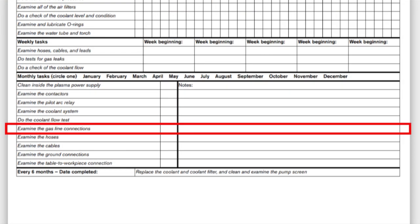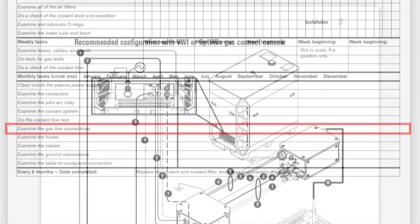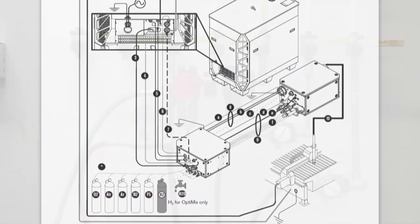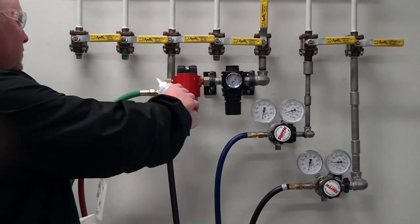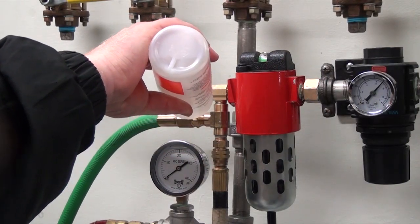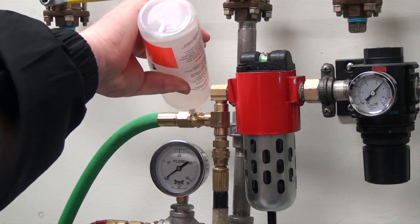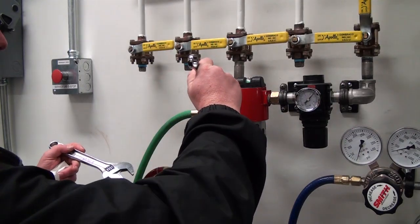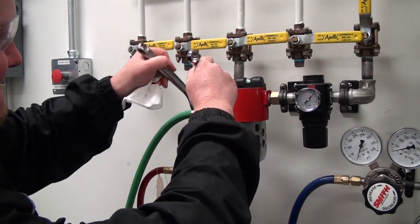Next, examine the gas line connections. Check all the gas line connections using the system diagram to identify all the areas that need to be checked. Spray each gas line connection with soapy water or leak check solution. Look for bubbles on any of the connections indicating a leak and tighten the fitting. If the fitting is already tight and you still have a leak, replace the hose assembly and or the fitting to resolve the problem.